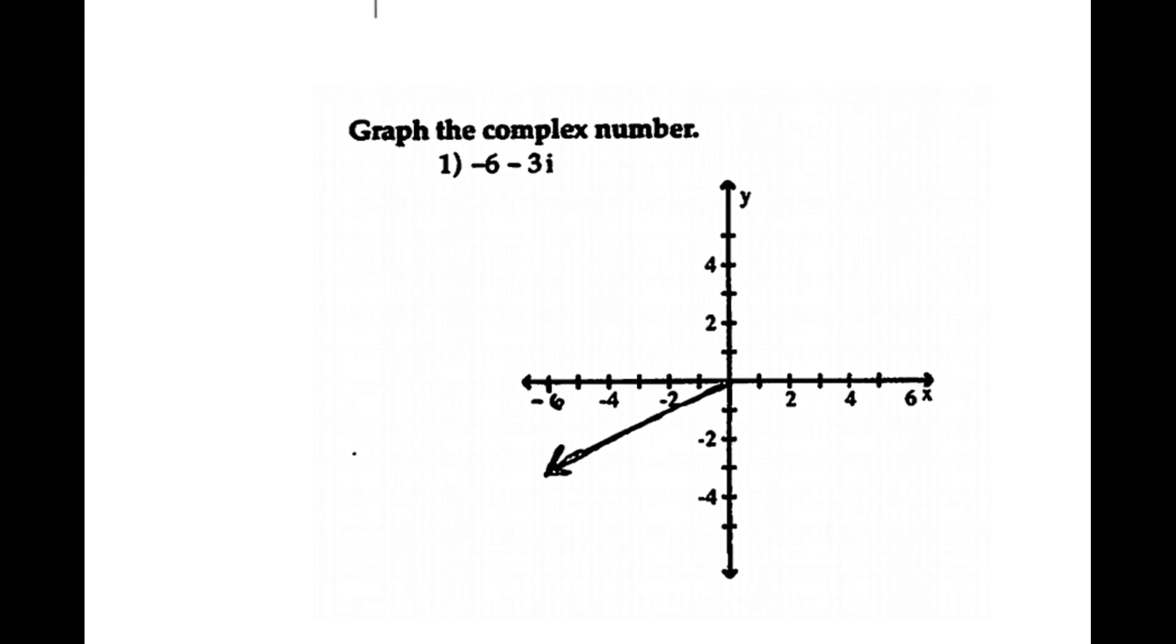Let's take a look at this complex number right here. Now it's already graphed, but we're going to do it again anyways. We're going to go out 6 units to the left, and then we're going to go 3 units down, because the vertical axis is the imaginary axis.